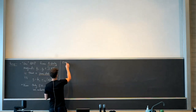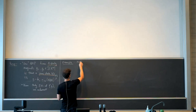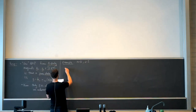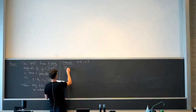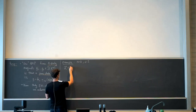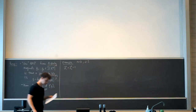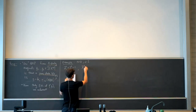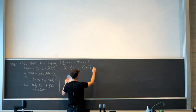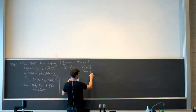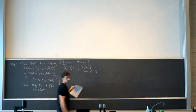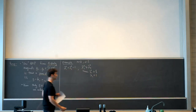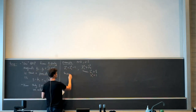We reduced the problem to the example of n=3 parties all working with qubits, so the Hilbert space dimension is two. The sum of the eigenvalues must equal one because they are eigenvalues of trace-one density operators. We order them so the first eigenvalue is not smaller than the second, which implies the first eigenvalue is at least one half, and all eigenvalues are at most one.